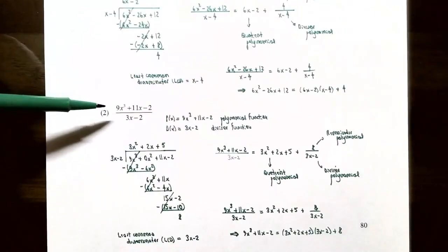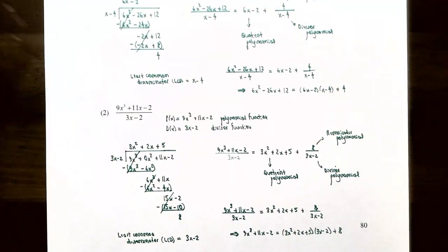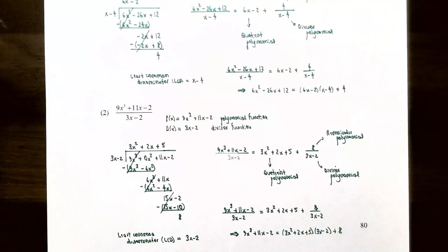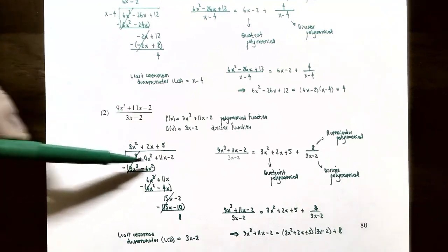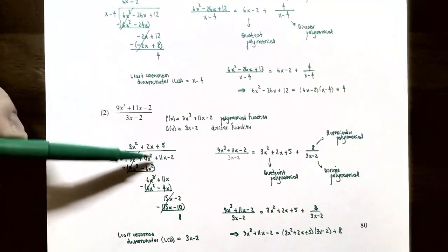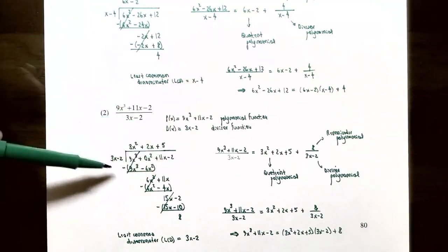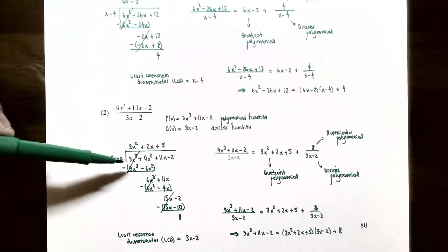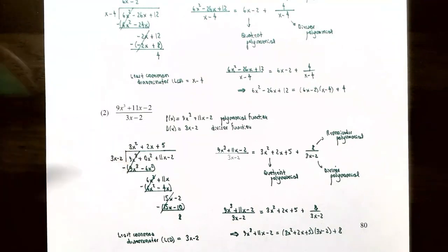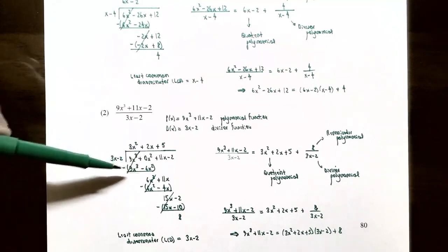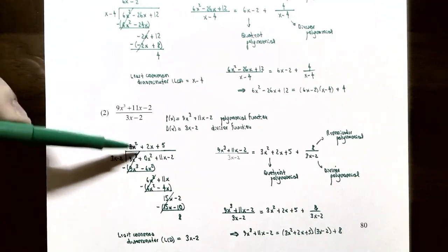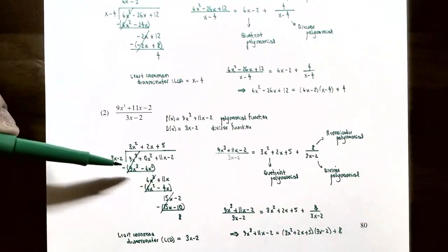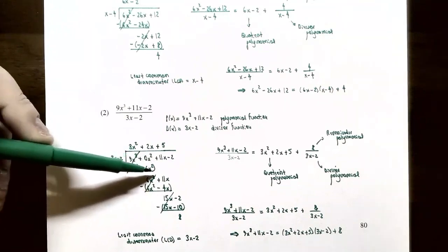Number 2: take 9x³ + 11x - 2 divided by 3x - 2. P(x) = 9x³ + 11x - 2 and D(x) = 3x - 2. Inside the division bar: 9x³ + 0x² + 11x - 2 (filling in the missing x² term with zero). How many times does 3x go into 9x³? It's 3x². So 3x² times 3x = 9x³, and 3x² times -2 = -6x². Subtract: 9x³ - 9x³ = 0, and 0x² - (-6x²) = +6x².